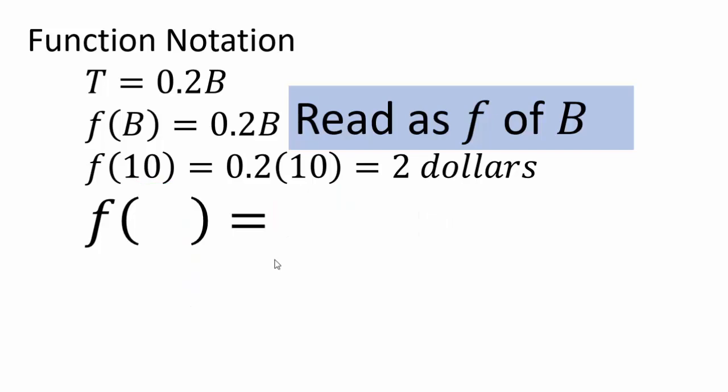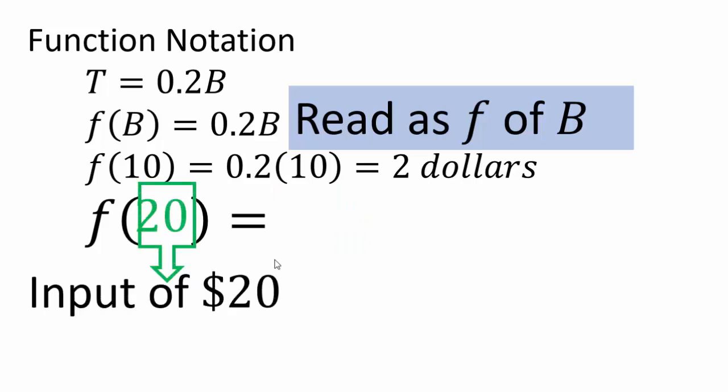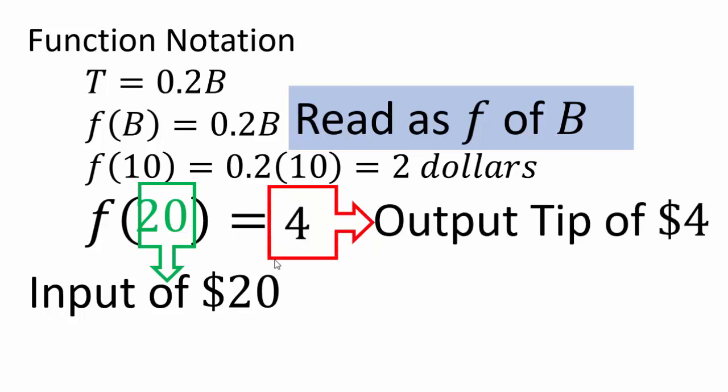So for example, if I asked you to compute F of 20. 20 is now my input. So it's actually $20 which means my bill was $20. What would be the tip? Why don't you do it for a second? Good. Same principle as above. So 0.2 times 20 which would give you 4. So output tip of $4. Input of $20 produced output of $4.